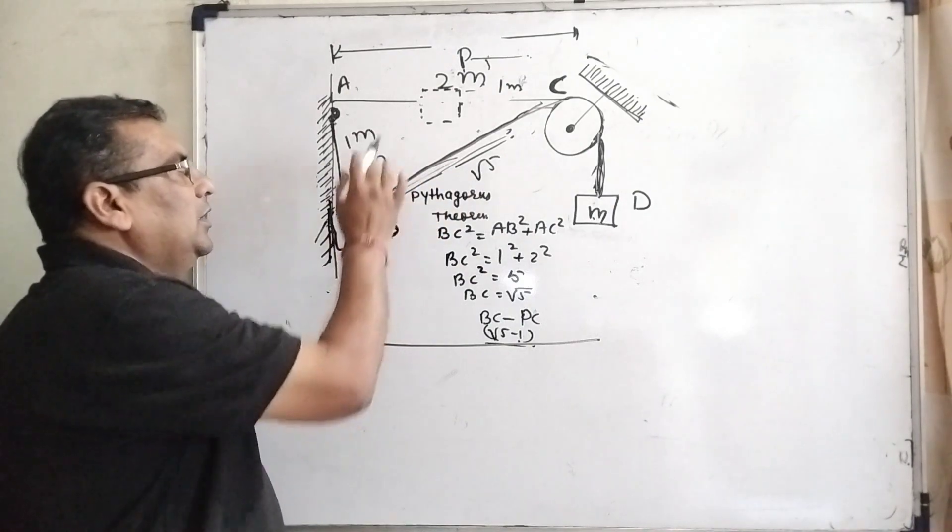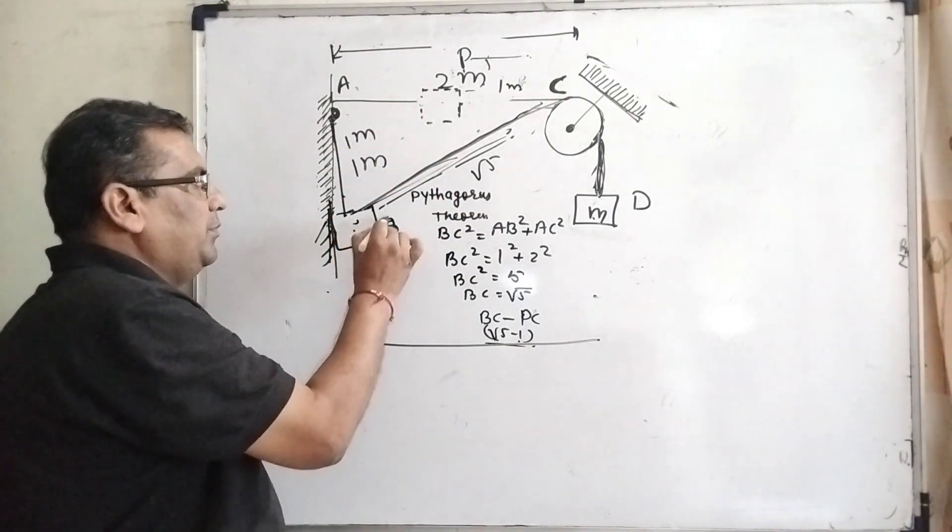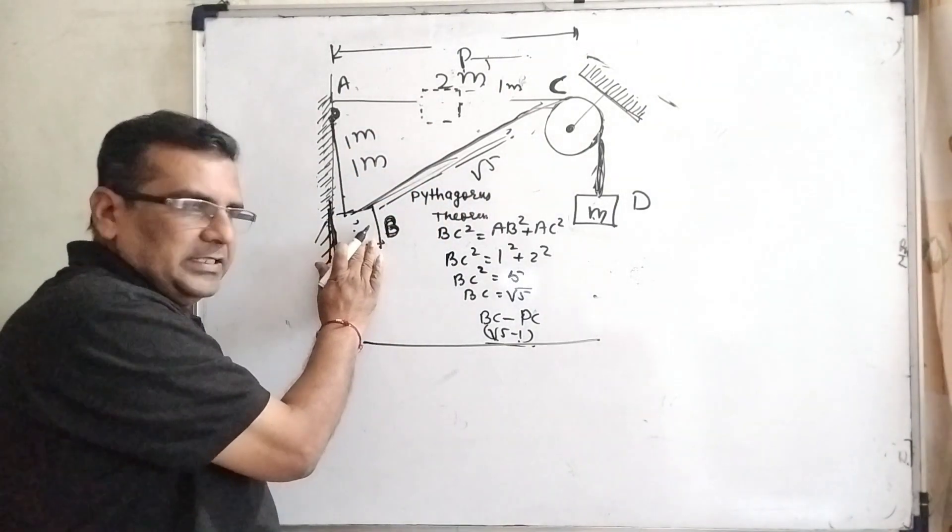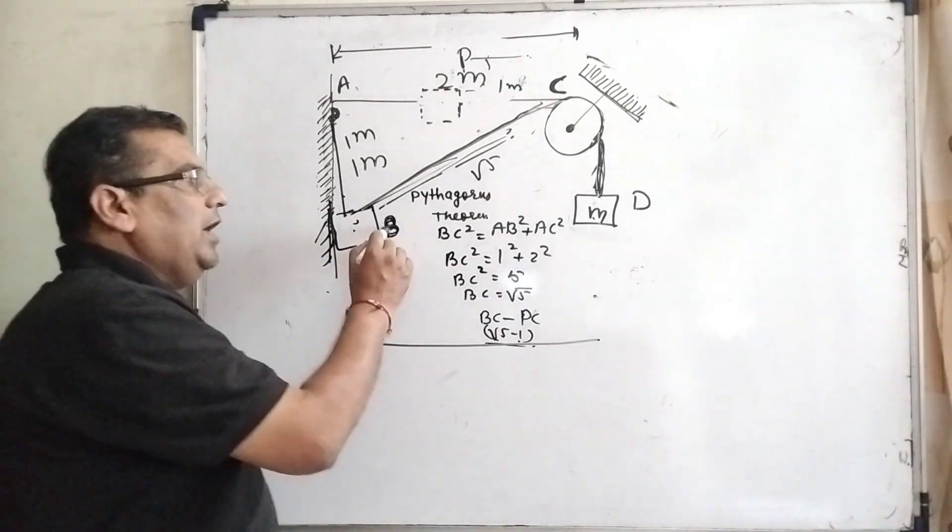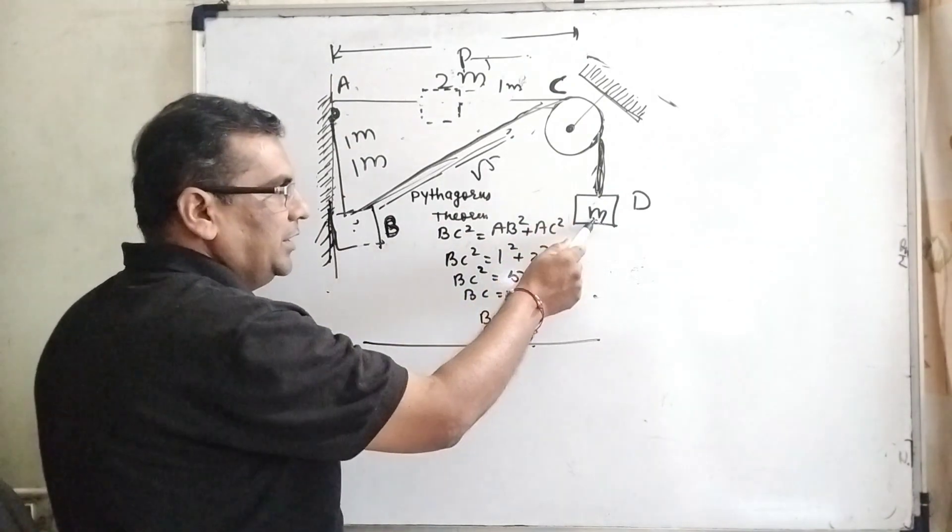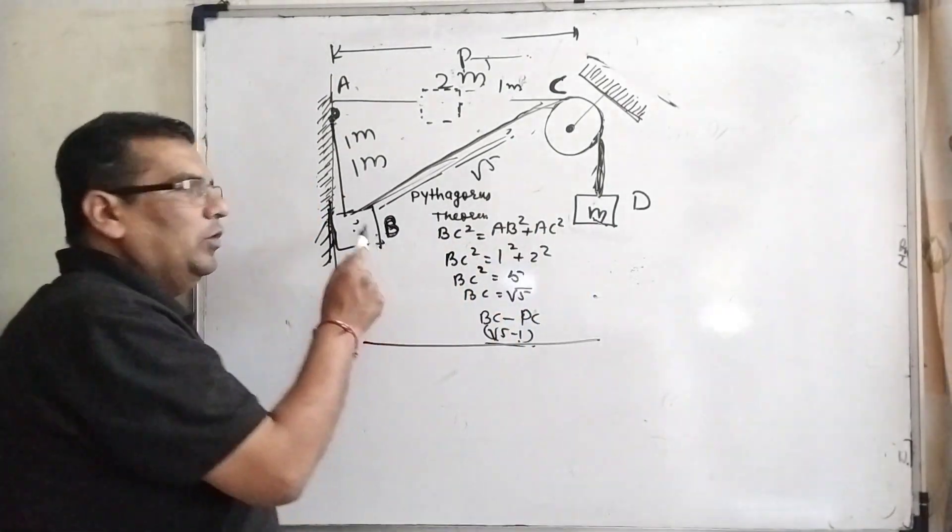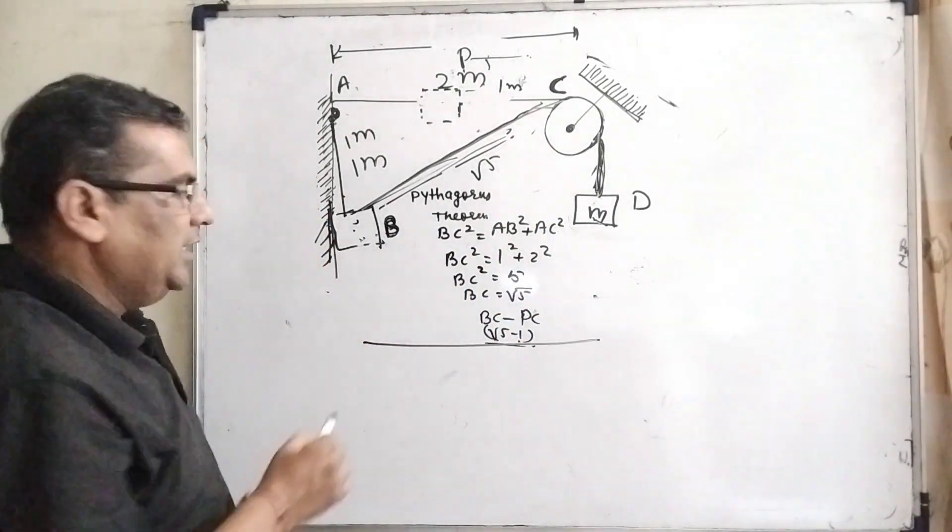I repeat again: Here the potential energy of this block decreases, and this energy converts into kinetic energy. We are using kinetic energy and potential energy increase for this block, and only kinetic energy increases.